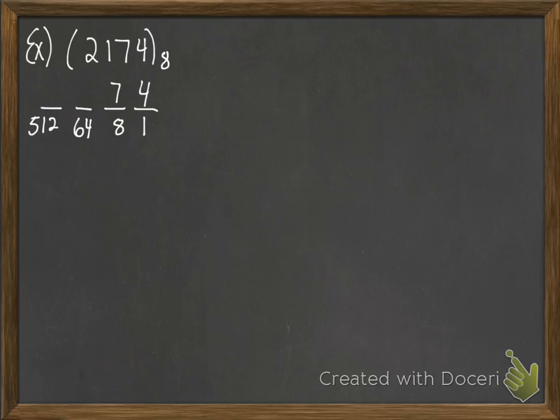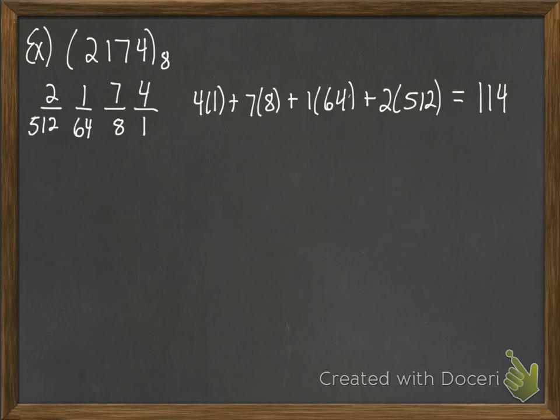And we have 4 ones, 7 eights, 1 group of 64, and 2 groups of 512. Then we just want to multiply and add those things up. So we write our product, add them all up, and we get 1148.